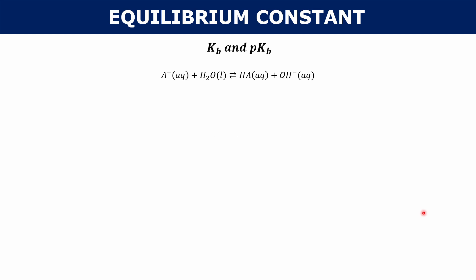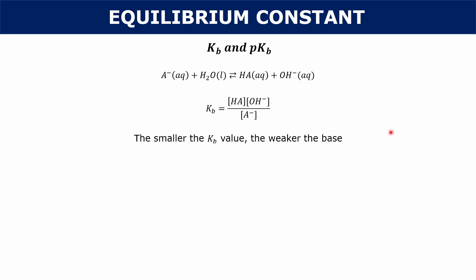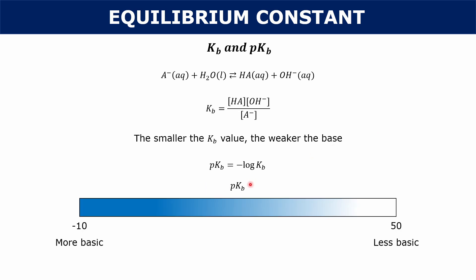Kb is basically the same thing but for a base. If you have a base where A⁻ is dissociating into HA and hydroxide ions, your Kb is HA times OH⁻ over A⁻. The smaller the Kb value, the weaker the base, and the higher the Kb value, the stronger the base. pKb is the negative log of your Kb, which also flips the scale — so a pKb of negative 10 would be really basic, while a pKb of 50 would be not basic at all.